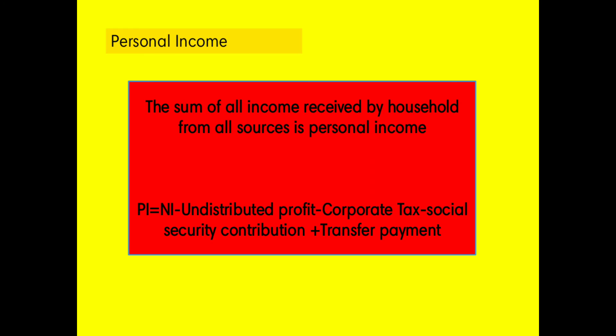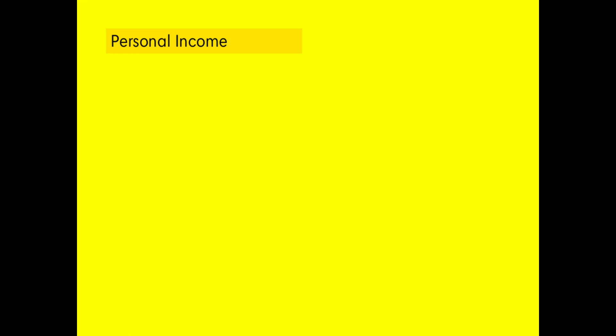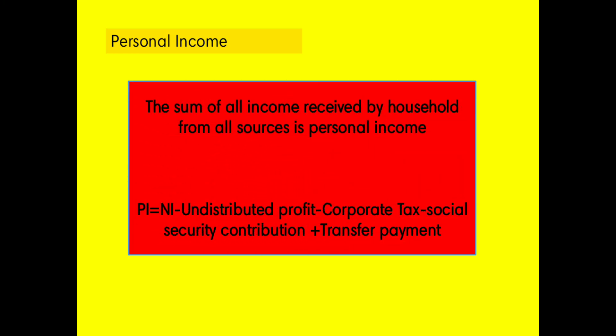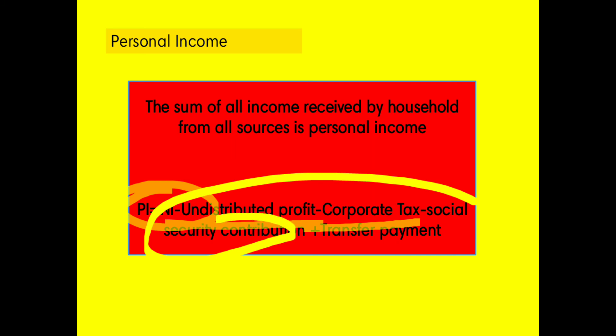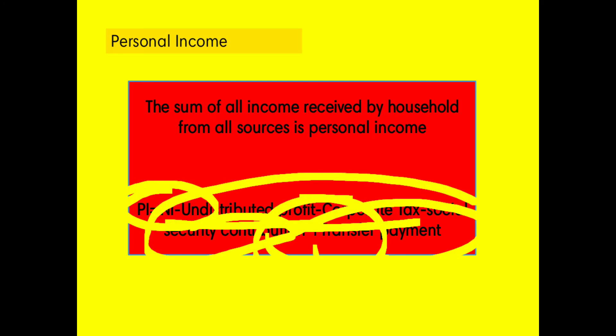The formula for personal income is: PI equals NI minus undistributed profit minus corporate tax minus social security contribution plus transfer payment.